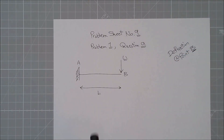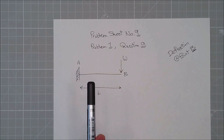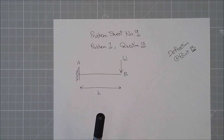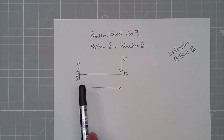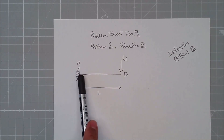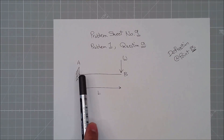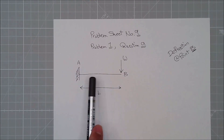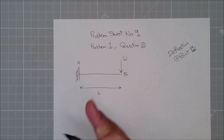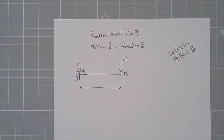If at any point the question asks what is the deflection at point A, it's a trick question. At point A, deflection is zero — it's a fixed support. The deflection and rotation, or slope, at point A are always zero because it's a fixed support.